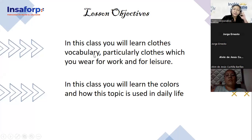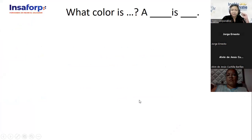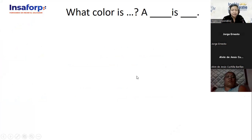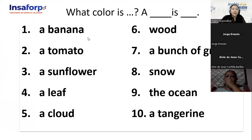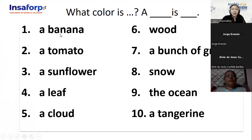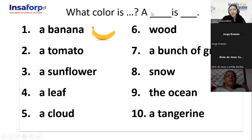In this class you will learn clothes vocabulary, particularly clothes you wear for work or leisure time. You will also learn the colors and how this topic is used in daily life. I will show you a picture and you will tell me what color it is. For example, what color is a banana? A banana is yellow. That is the structure. If I ask you what color is a tomato, you will say a tomato is red.